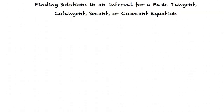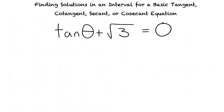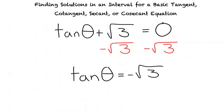For our first example problem, we will find the solutions of our tangent equation: tangent theta plus square root of 3 equals 0. The first step is to isolate tangent theta by subtracting square root of 3 from both sides. This results in tangent theta equals negative square root of 3.